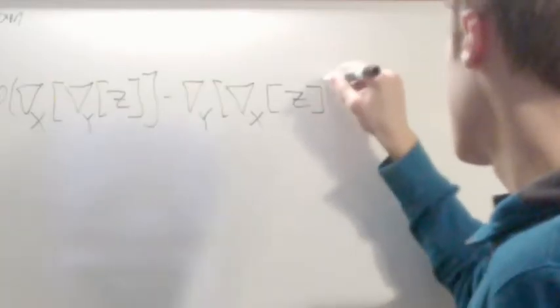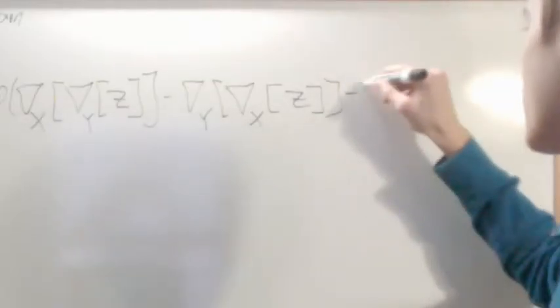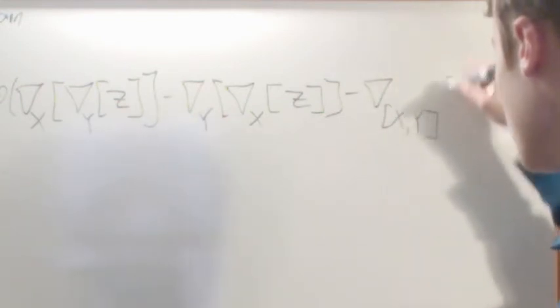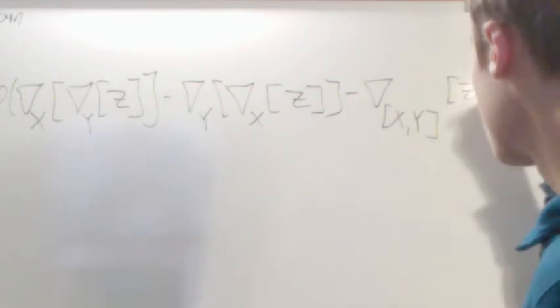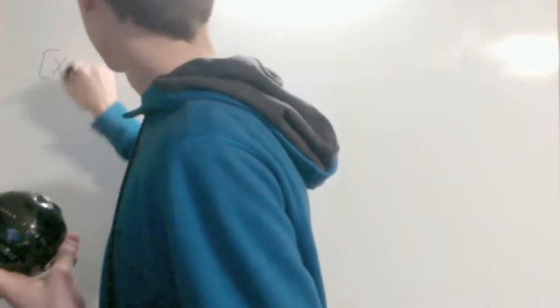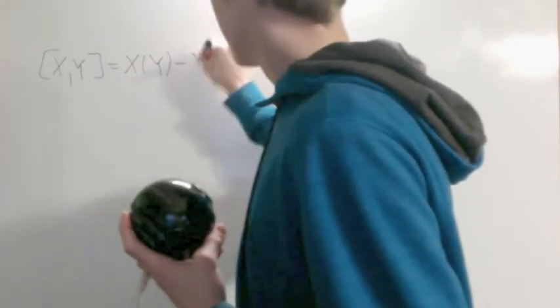And then minus the covariant along Y, the covariant along X to Z, and then minus the covariant along the commutator X, Y applied to Z. Here I'm using the definition that the commutator of X, Y is equal to X applied on Y minus Y applied on X.